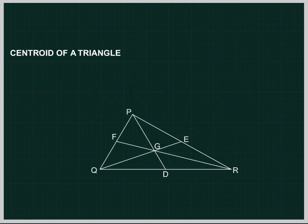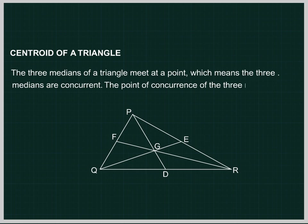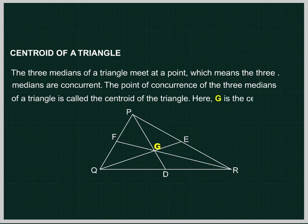Centroid of a Triangle. The three medians of a triangle meet at a point, which means the three medians are concurrent. The point of concurrence of the three medians of a triangle is called the centroid of the triangle. G is the centroid of the triangle PQR.